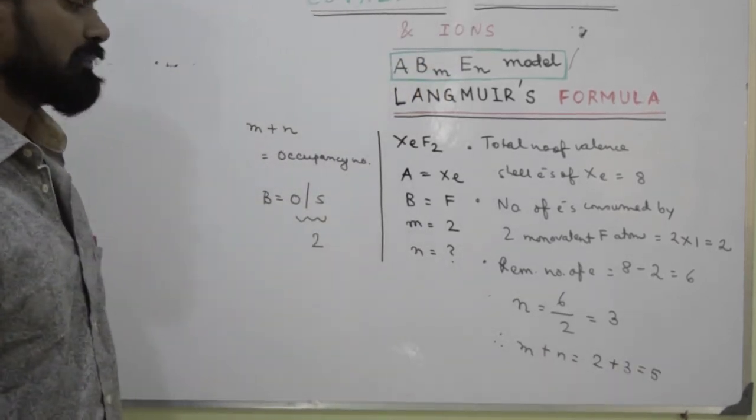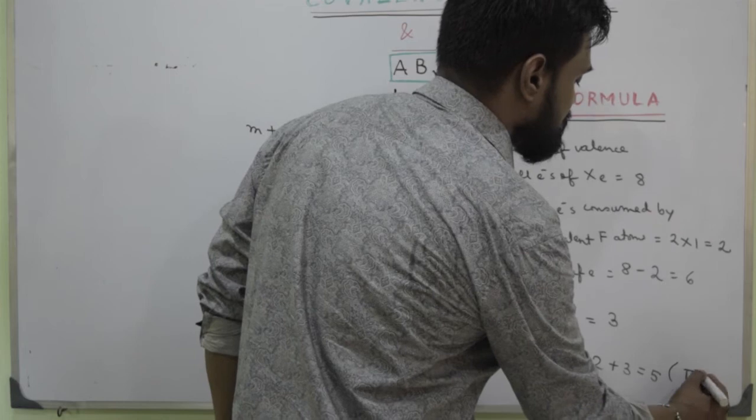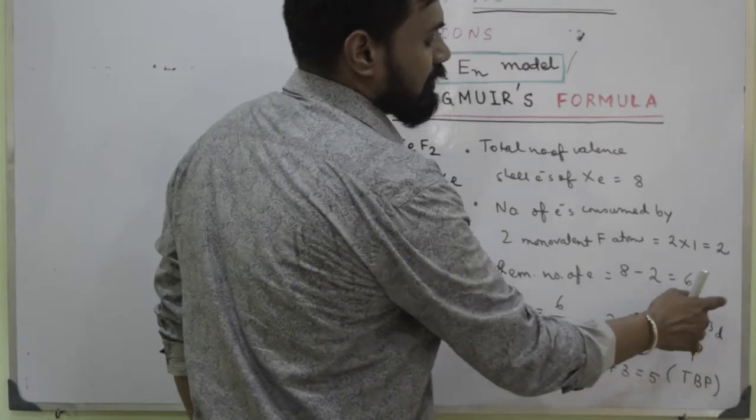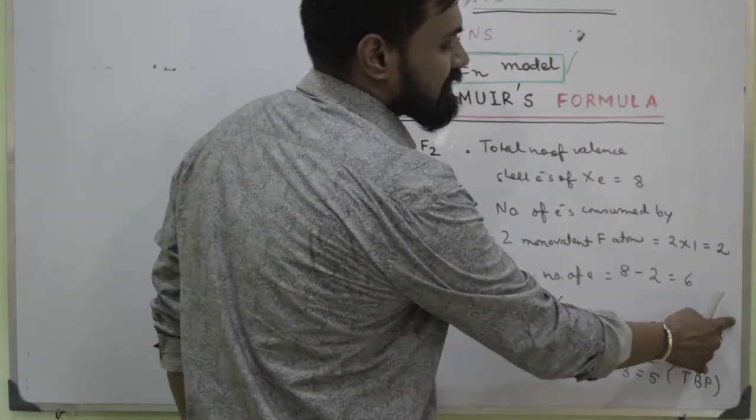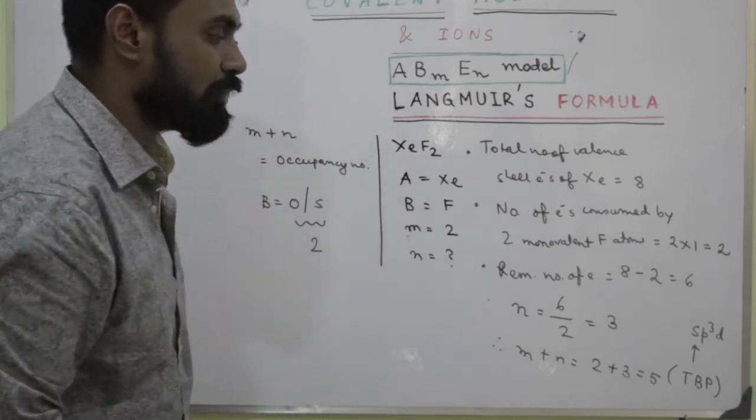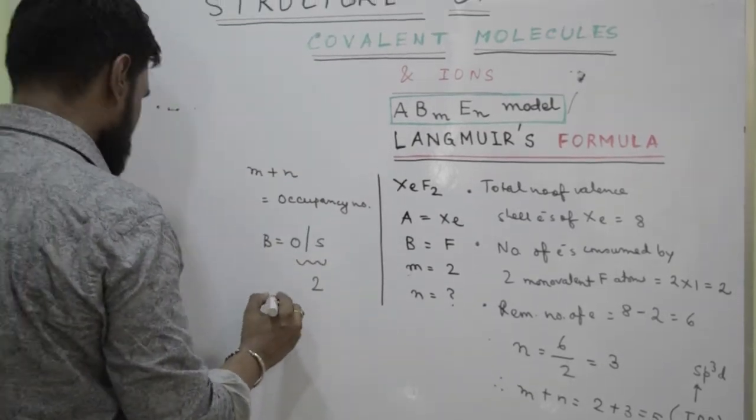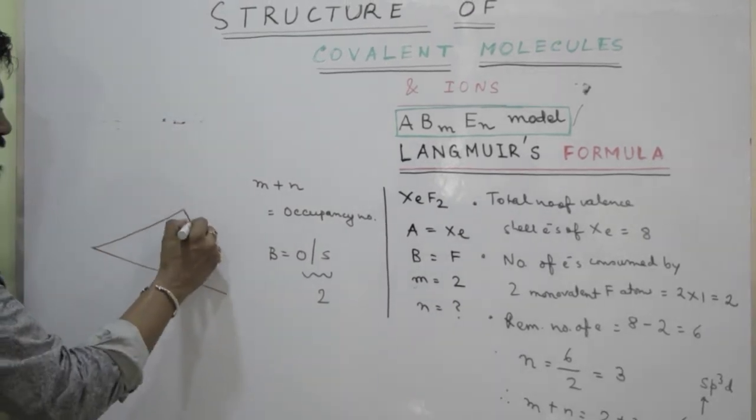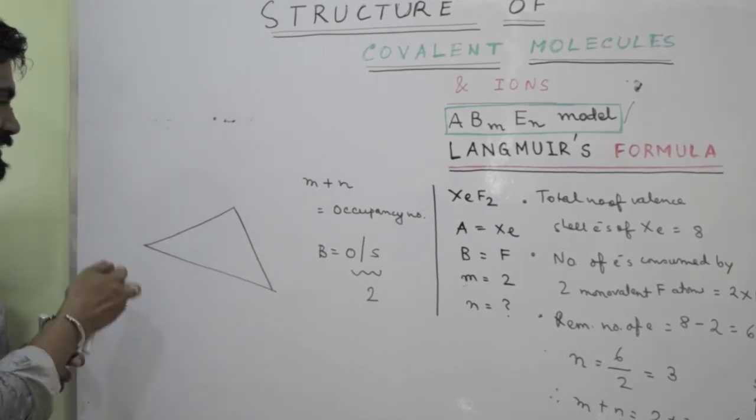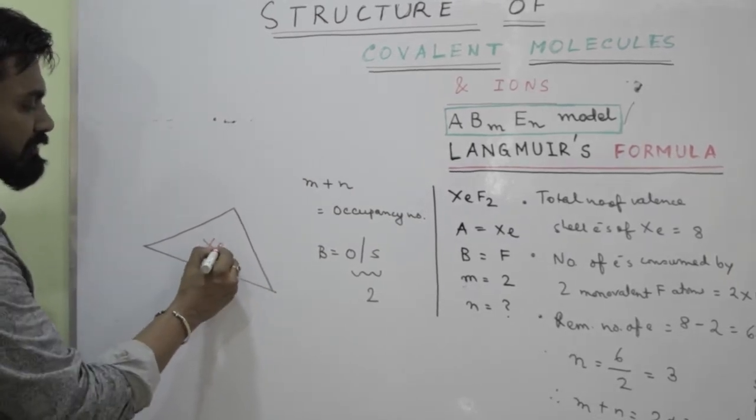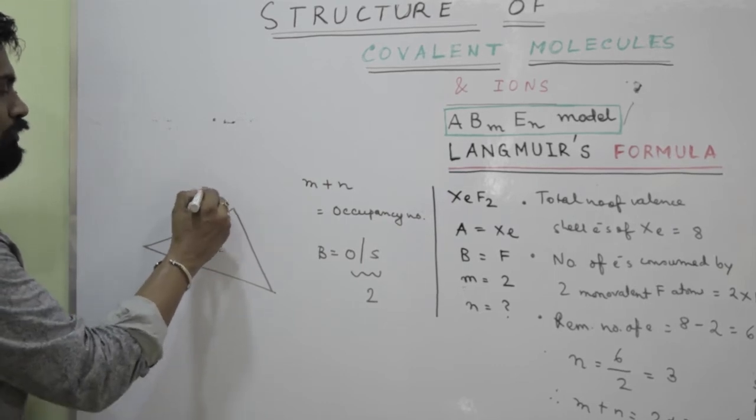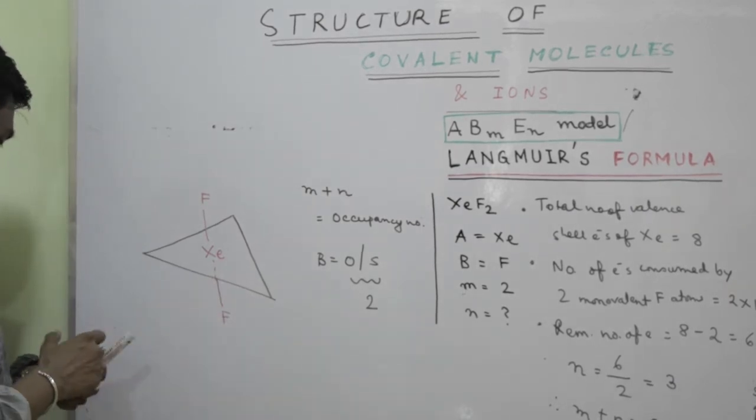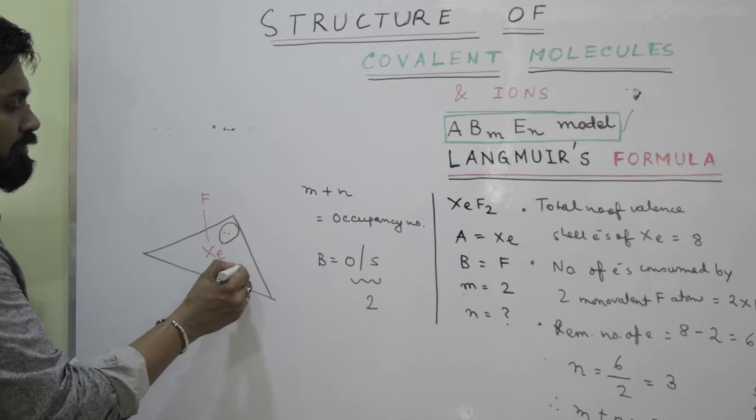Now if occupancy number is 5, the geometry is TBP, hybridization comes to be sp3d. You can just count: 1 plus 3 plus 1 gives you 5. s1p3d1. Now you know that sp3d has a trigonal bipyramidal geometry, which is something like this. This is a trigon at the center. I put the xenon...